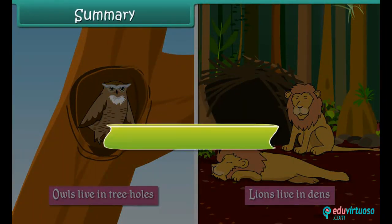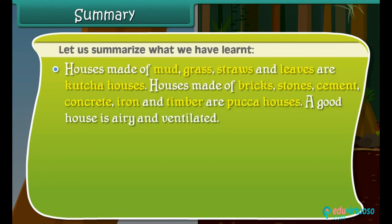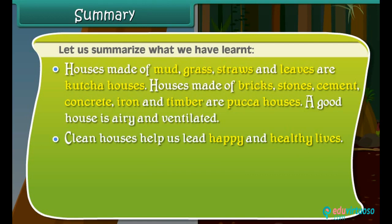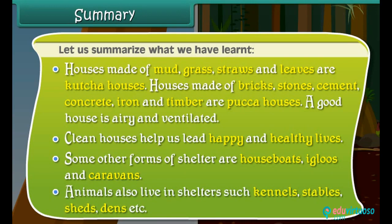Let us summarize what we have learned. Houses made of mud, grass, straws and leaves are kacha houses. Houses made of bricks, stones, cement, concrete, iron and timber are pakka houses. A good house is airy and ventilated. Clean houses help us lead happy and healthy lives. Some other forms of shelter are houseboats, igloos and caravans. Animals also live in shelters such as kennels, stables, sheds, dens, etc.